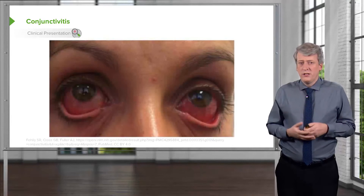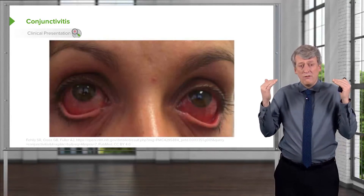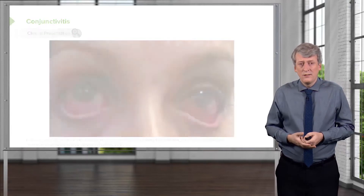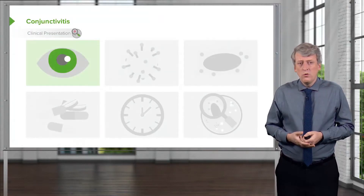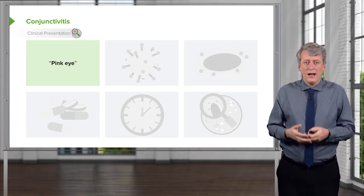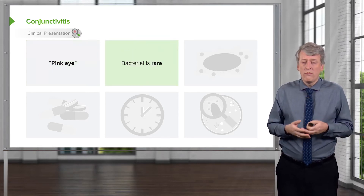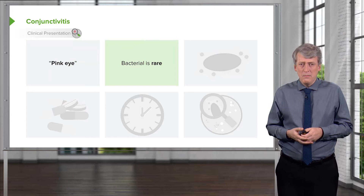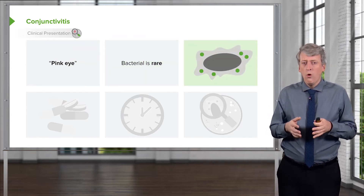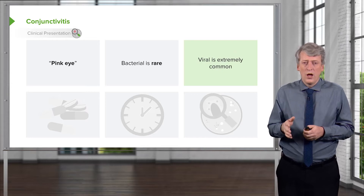Moving on to conjunctivitis. Conjunctivitis is an infection of the conjunctiva of the eyes — generally this is what we typically call pink eye. It's usually caused by viruses. It's rare for this to be bacterial. We really probably over-treat this. Viral is the most common entity.